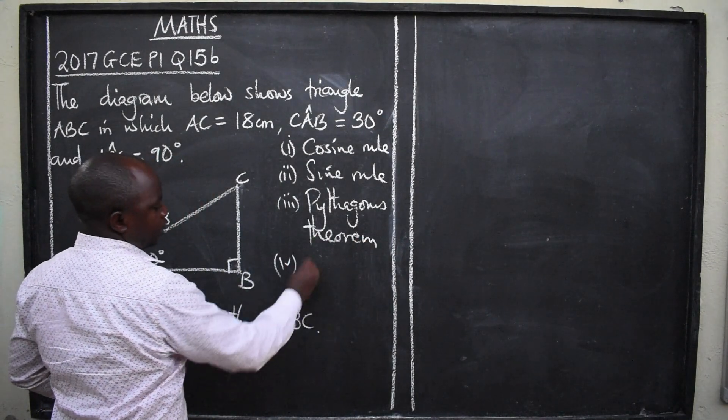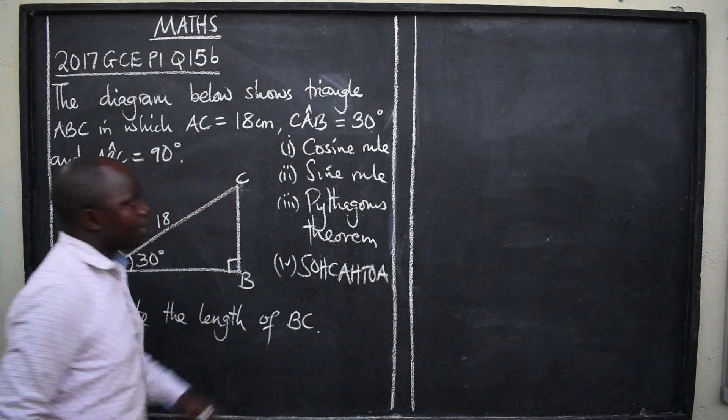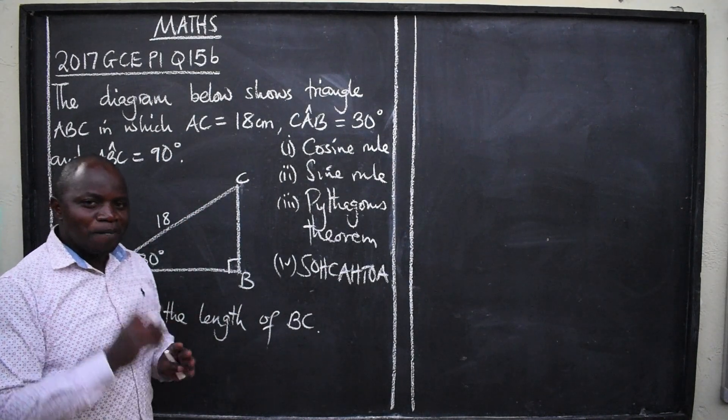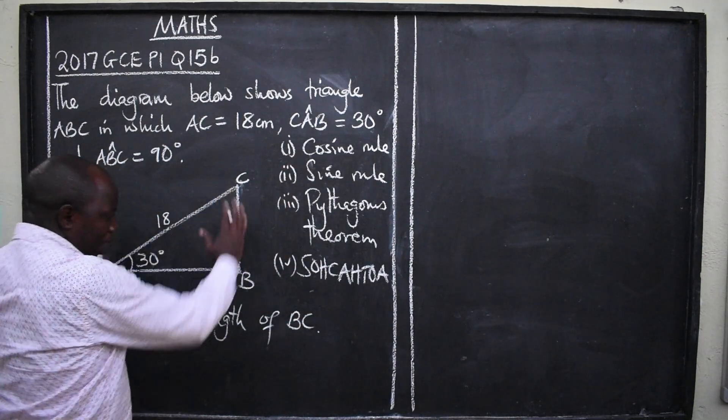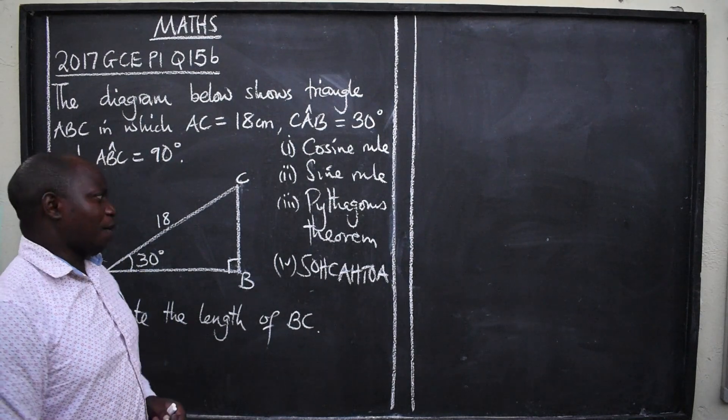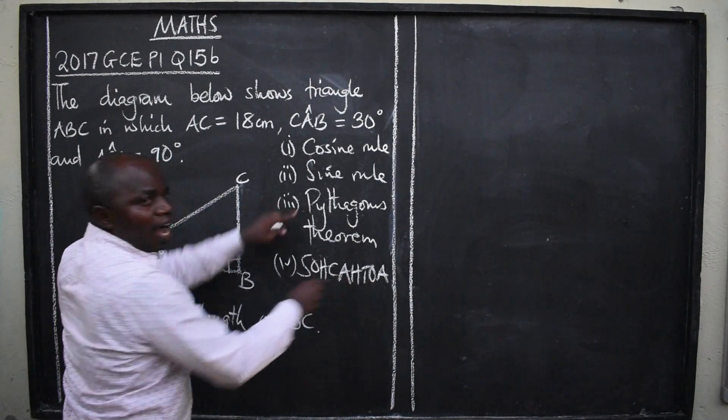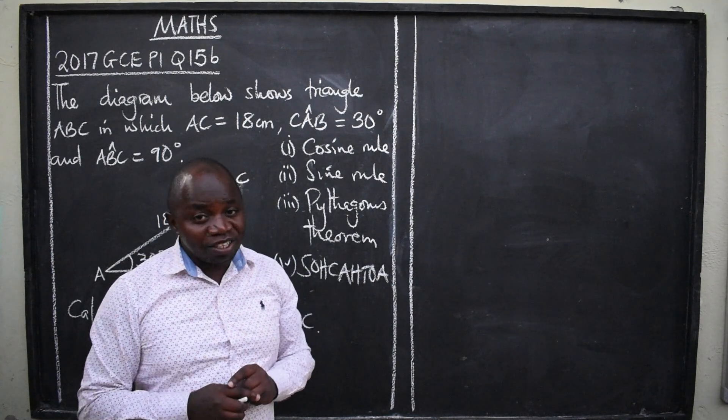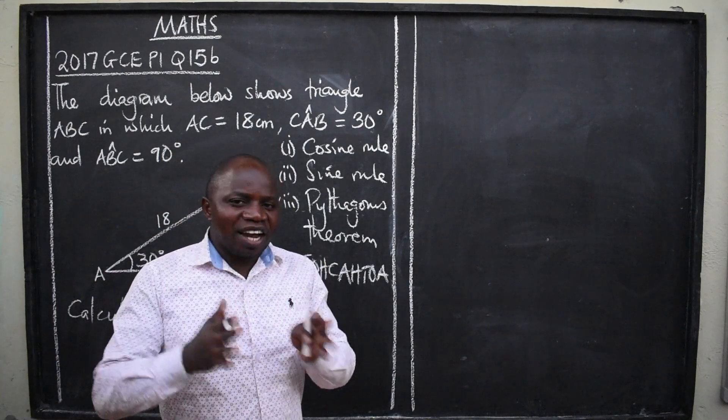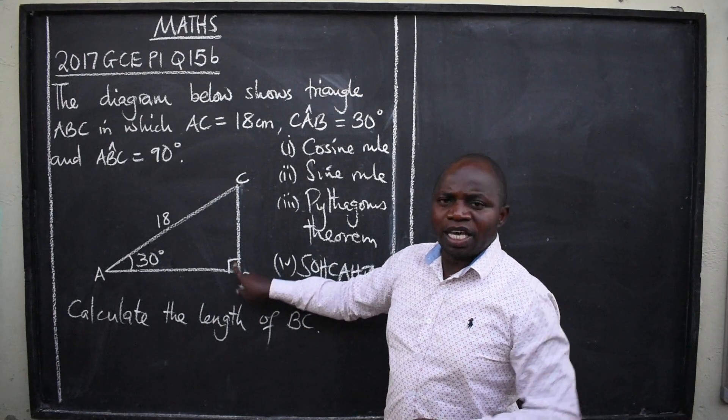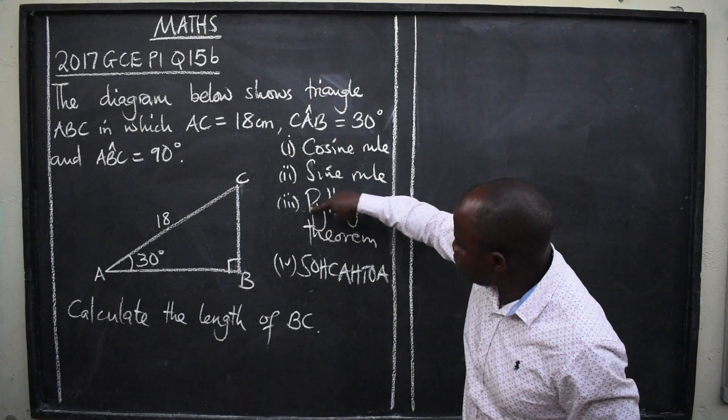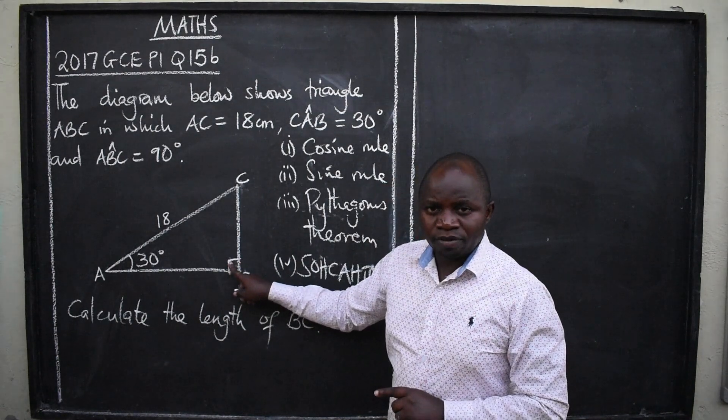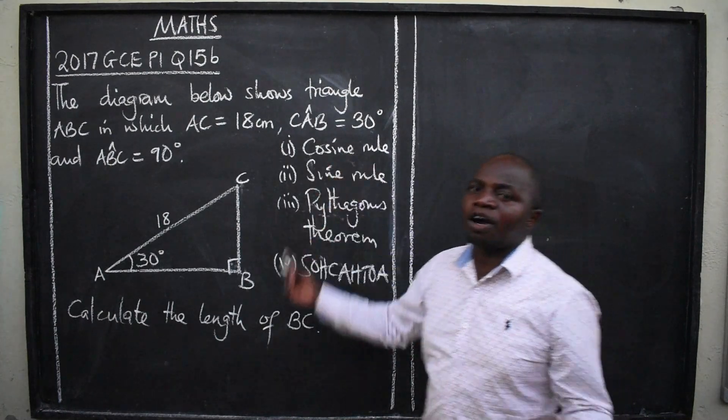Any of these can be used to calculate the length in a triangle. But only one will be used here. Or only one can be applicable here. Now, which one? How do you tell? Well, these two, the Pythagoras theorem and SOHCAHTOA, are only used in one type of a triangle. Get me very well there. Only in one type of a triangle. Now, what type of a triangle is that? Right-angled triangle. And when we say a right-angled triangle, we are talking about a triangle that has got this. If the triangle doesn't have a 90 degree, please don't use these two. They cannot be used. You only use these two in a triangle that has got this symbol.